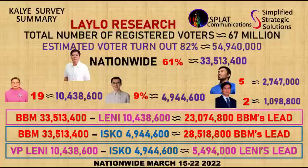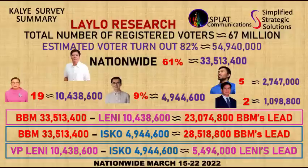For former Senator Ferdinand Marcos Jr., who garnered 61% preference share, this is equivalent to approximately 33,513,400 votes. VP Leni Robredo is estimated to receive approximately 10,438,600 votes. Manila Mayor Isko Domagoso's 9% translates to around 4,944,600 votes. Senator Manny Pacquiao is estimated at approximately 2,747,000 votes, while Senator Ping Lacson is estimated at around 1,098,800 votes.